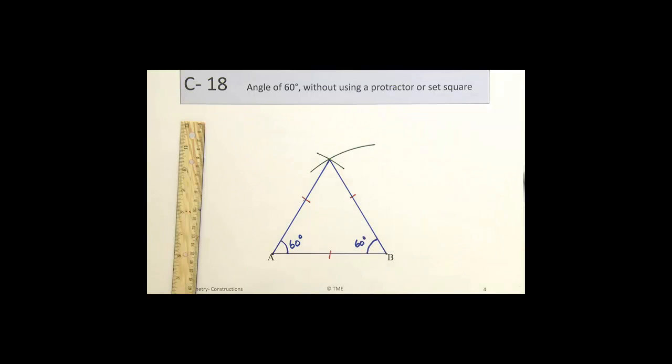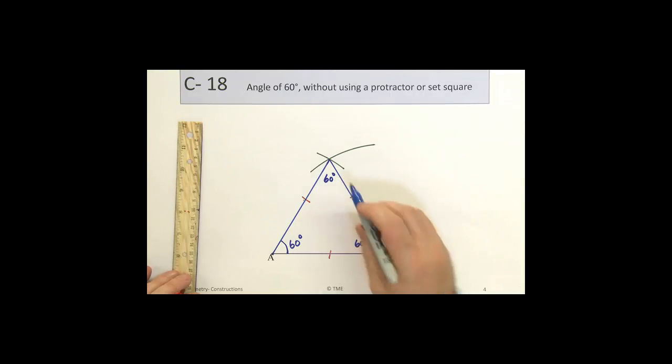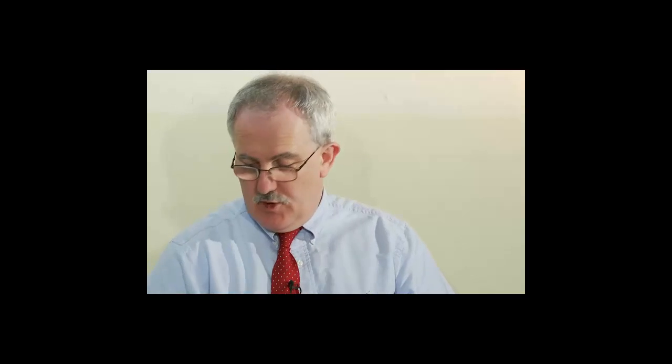The three lengths are the same. The three angles are the same. We have constructed an angle of 60 degrees without using a protractor or a set square.